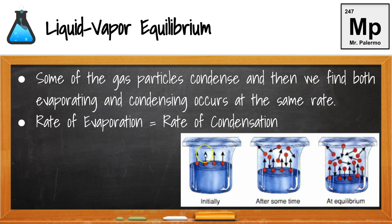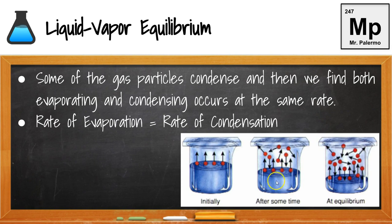If I have a beaker and put a top on it, it creates a closed environment, and in this closed environment we can reach equilibrium. Without the top, we're going to lose gas to the room and it will never reach equilibrium. Since this is closed, initially our surface water molecules are going to start to break free of those intermolecular forces and turn to a gas. These gas particles will start moving around and eventually condense back to a liquid, so we have evaporation and condensation occurring. Eventually the rate becomes equal — the rate of evaporating equals the rate of condensing. That is the liquid-vapor equilibrium, and it must be in a closed environment.